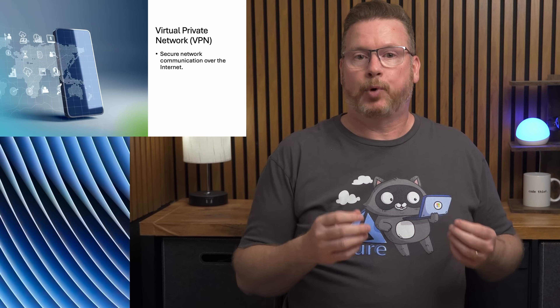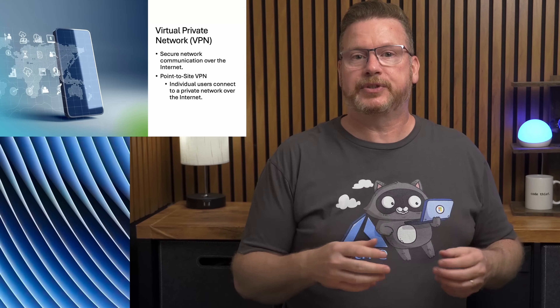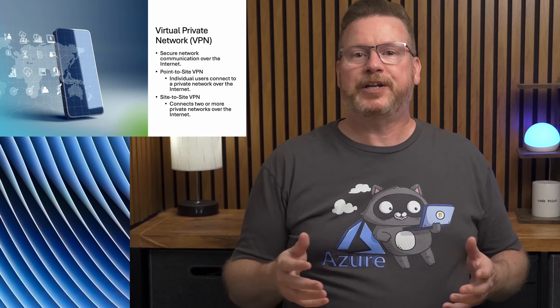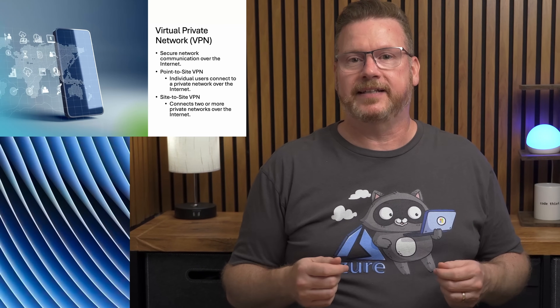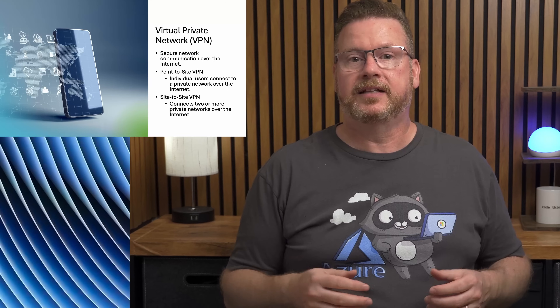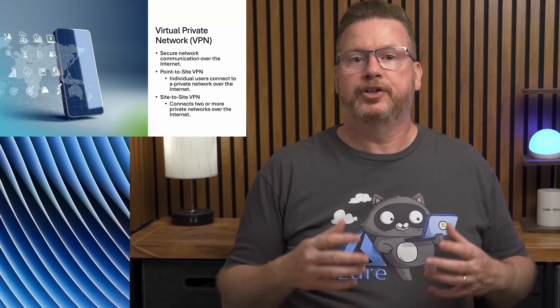Let's start with the basics. A virtual private network or VPN allows secure communication over the internet. There are two main types: point-to-site, where a single user connects to a private network, and site-to-site, which connects two private networks together. This video focuses on the site-to-site type.